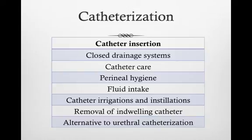Suprapubic and condom catheters are used as alternatives to indwelling catheters. Suprapubic catheters require surgical placement of a catheter through the abdominal wall. Condom catheters are used for male patients with external genitalia and can be changed daily for patients with any form of incontinence.